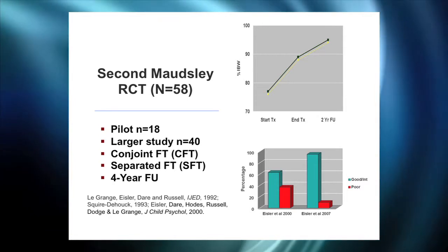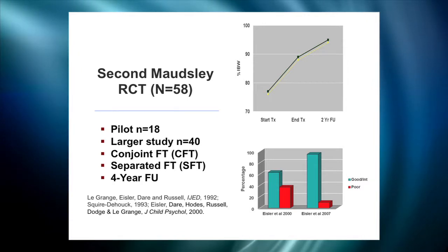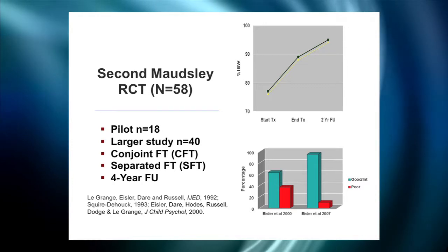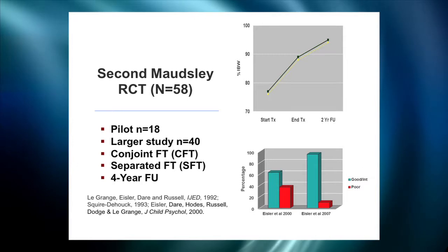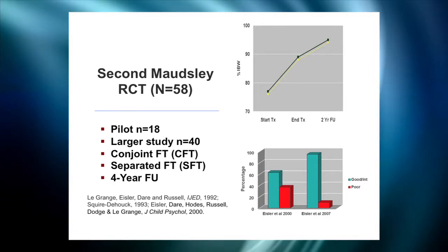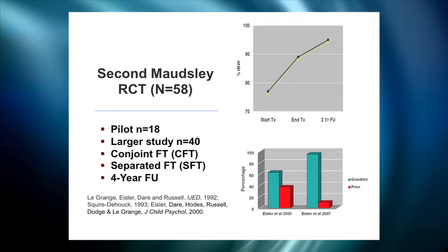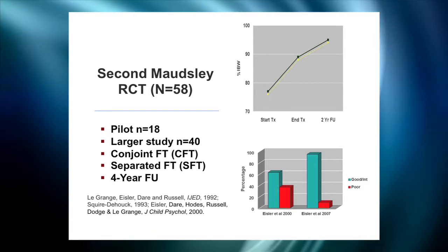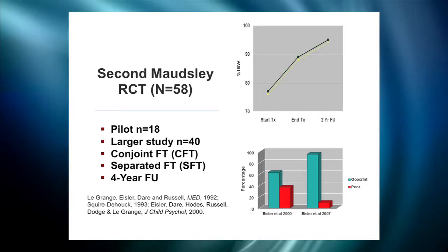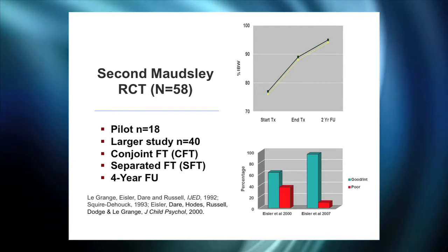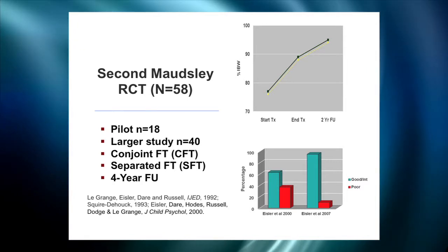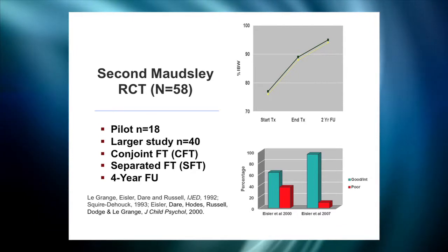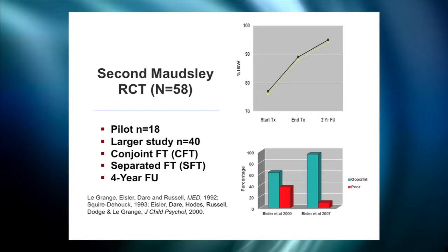Participants were randomly allocated to one of two forms of family-based treatment: conjoint or separated. Conjoint means everyone living under the same roof gets invited to join in the work. Separated means the therapist meets with the adolescent for about 20 minutes of general support before meeting with the parents separately, but with the same goals — engineering the parents' capacity to take on weight restoration. Starting at about 75% of expected body weight, after six months of treatment with about 10 sessions, patients were at 90% of ideal body weight. At two-year follow-up they continued to progress.